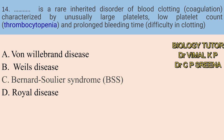Fourteenth question: dash is a rare inherited disorder of blood clotting characterized by unusually large platelets, low platelet count or thrombocytopenia, and prolonged bleeding time. Options: A. Von Willebrand disease, B. Weil's disease, C. Bernard Soulier syndrome, D. Royal disease. Here answer is C — Bernard Soulier syndrome.